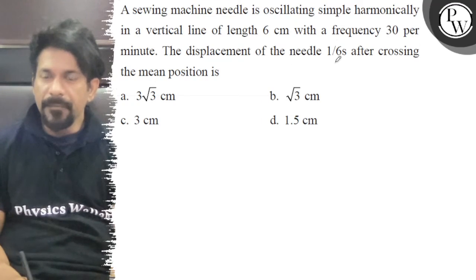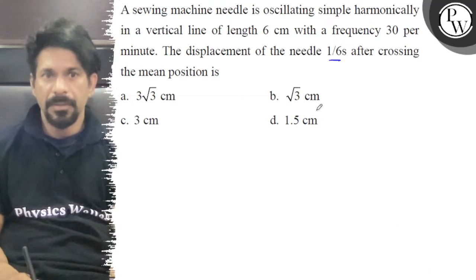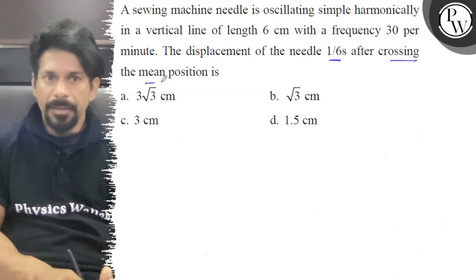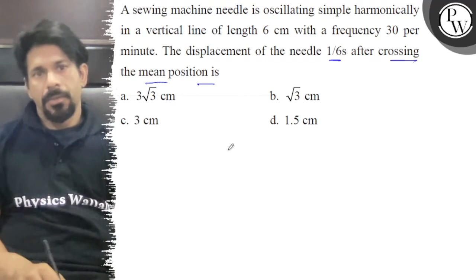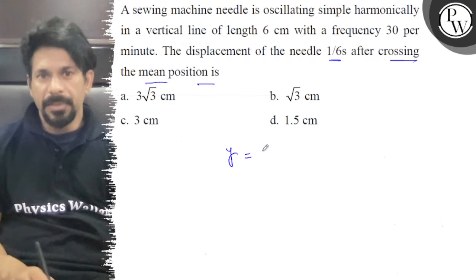The displacement of needle 1 by 6th after crossing the mean position is... So, y is equal to a sin omega t plus phi.